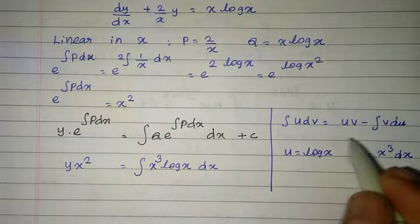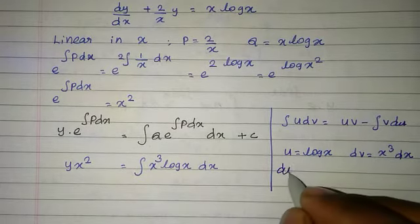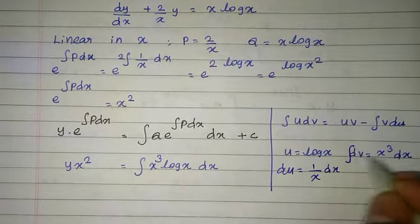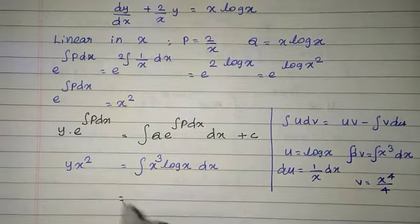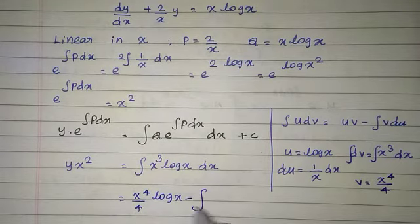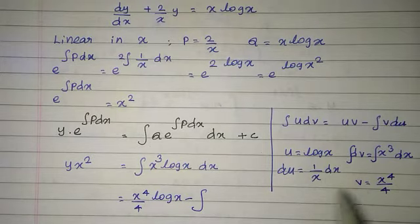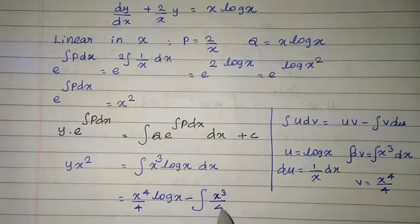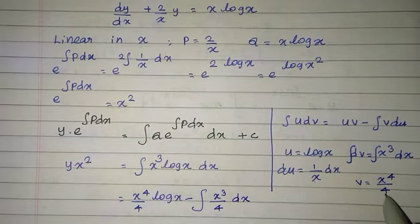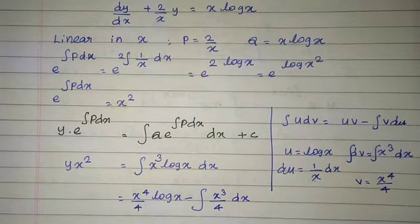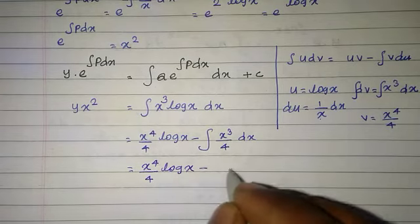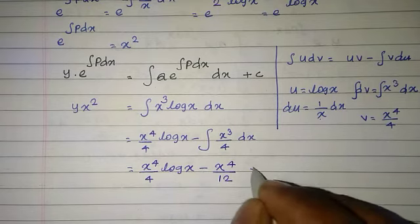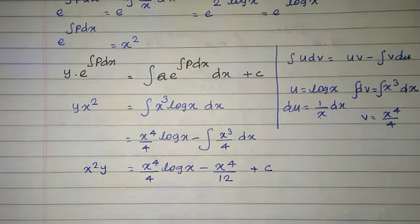So du equal to 1/x into dx and v equal to x power 4 by 4. Applying the formula uv minus integral v du: x power 4 by 4 into log x, minus integral of x power 4 by 4 into 1/x dx. The x cancels to give x cubed by 4, so integrating: x power 4 by 4 into log x minus x power 4 by 12 plus c. Therefore x squared y equal to x power 4 by 4 into log x minus x power 4 by 12 plus c, which is the solution of the given differential equation.